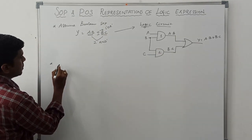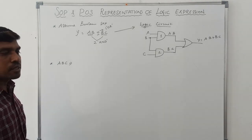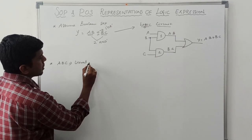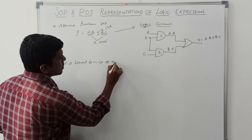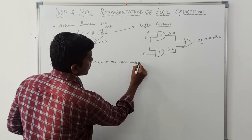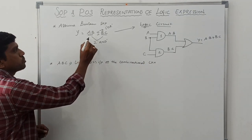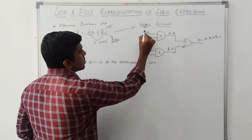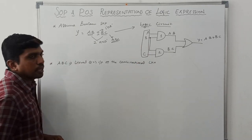Here we have three variables: A, B, and C. These three variables are considered as literals, or the inputs of the combinational circuit. In this Boolean expression we have three variables A, B, C, which are used as the combinational circuit inputs.